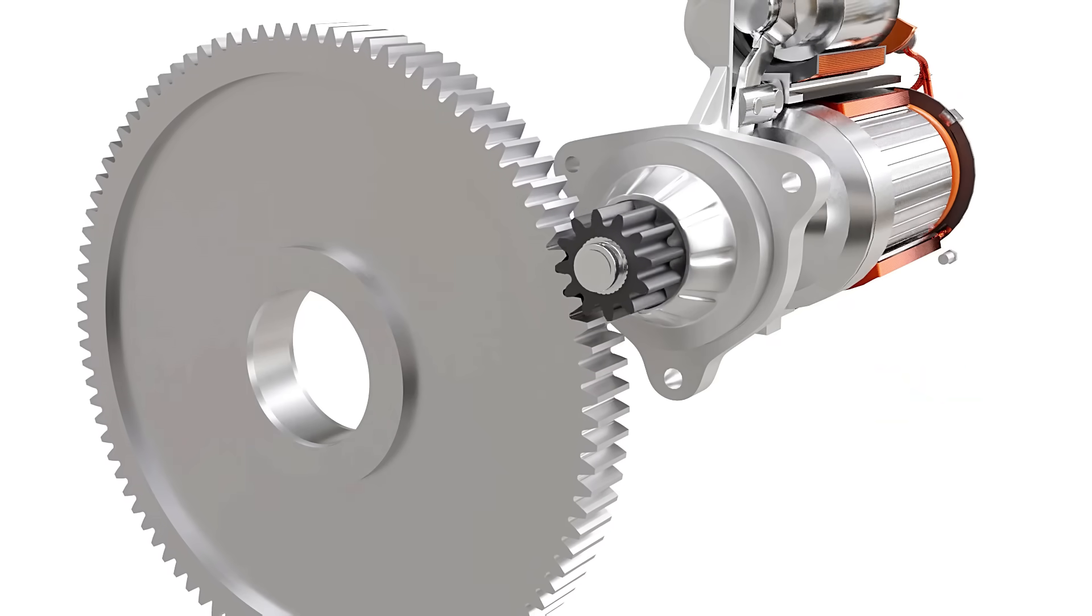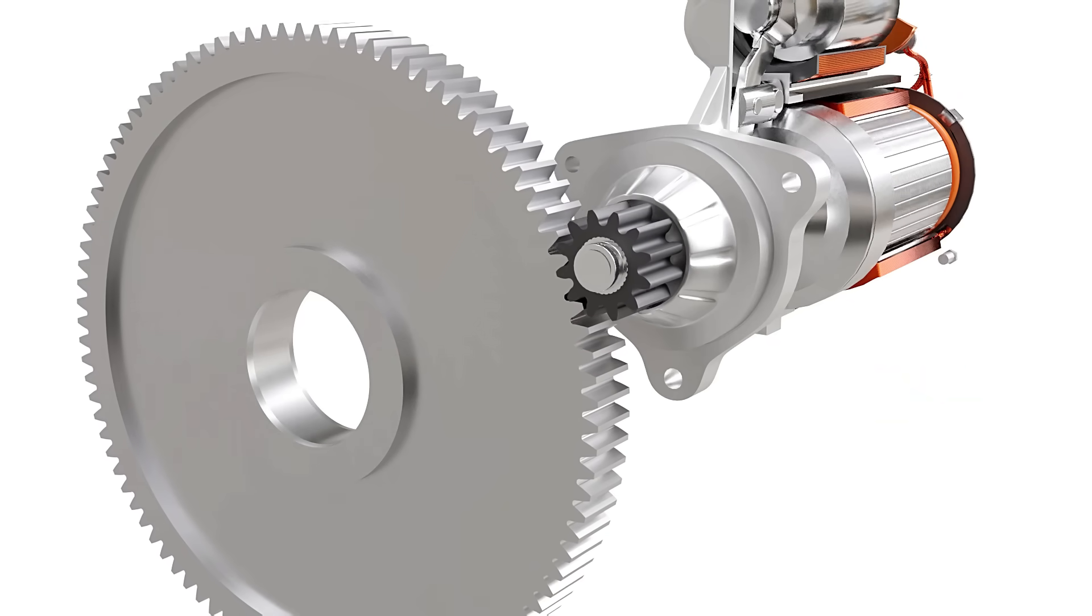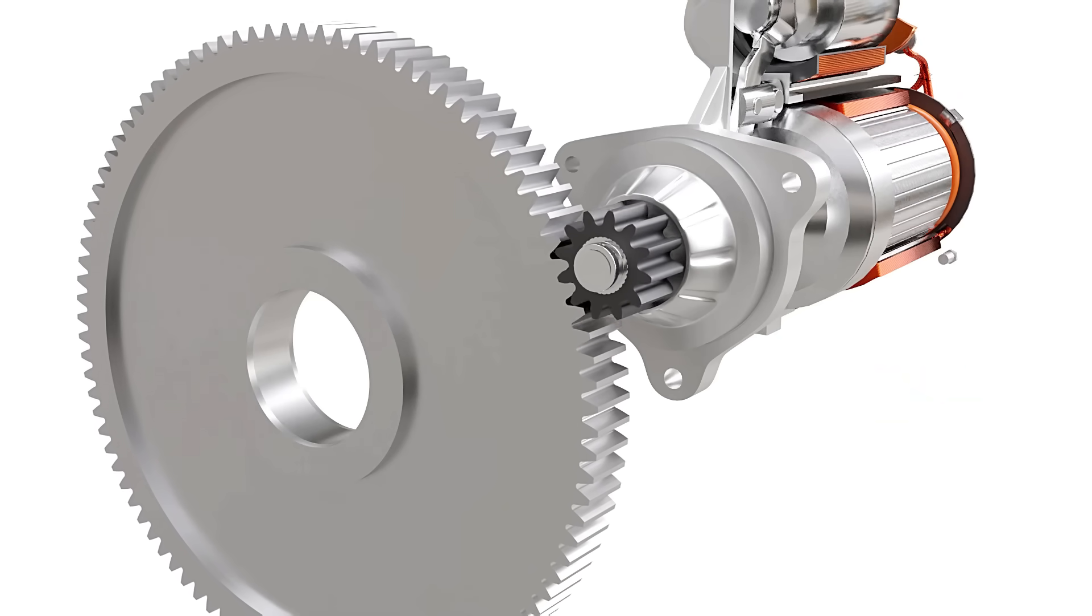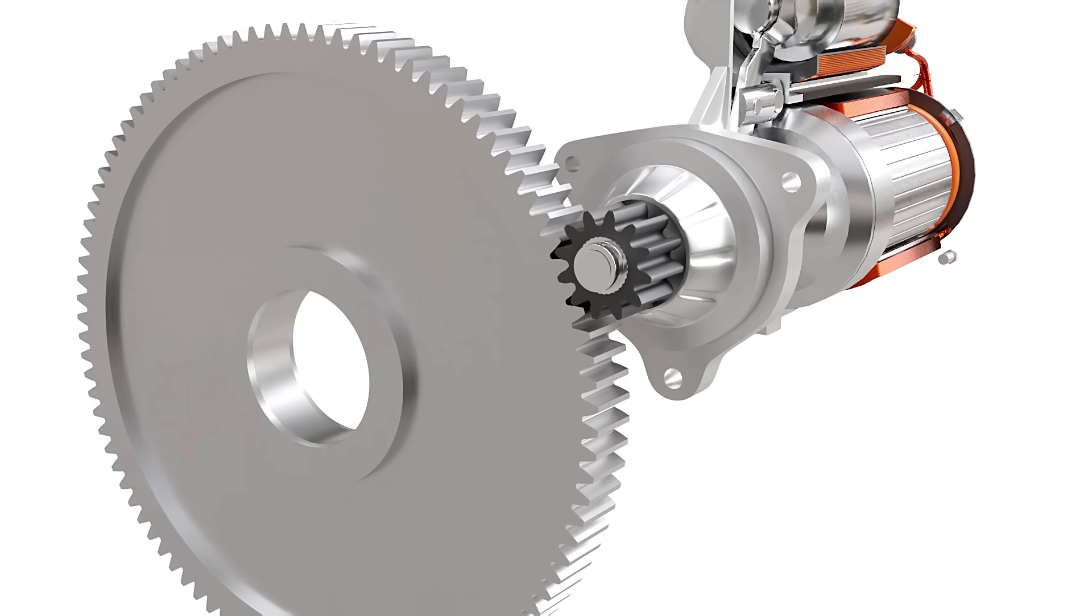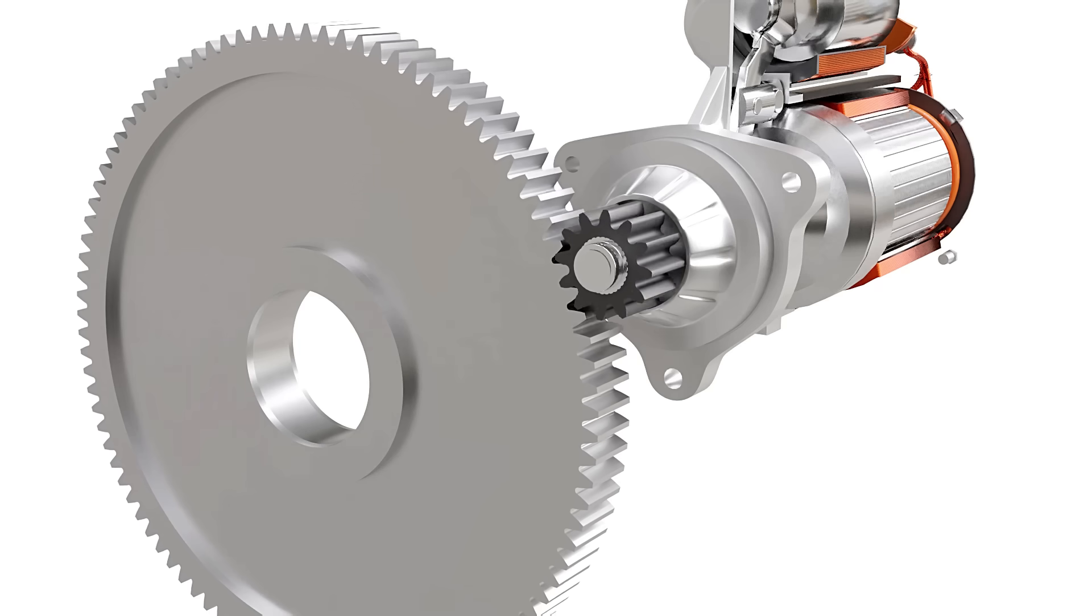As we can observe, the pinion is considerably small compared to the flywheel. The gear ratio of the flywheel and pinion is generally from 15 to 1 to 20 to 1. The high torque obtained from this gear reduction is still insufficient to crank the engine.